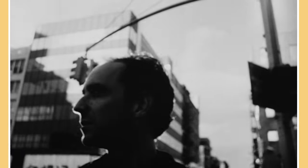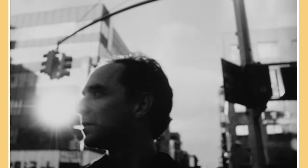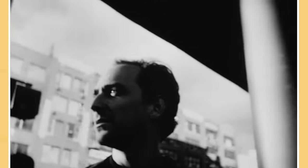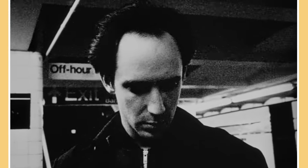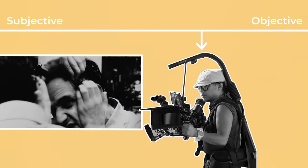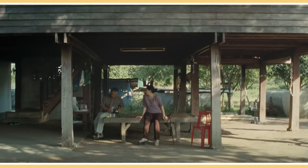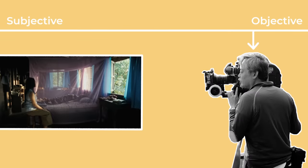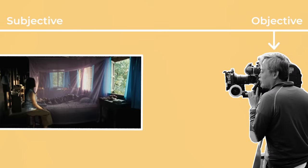A good rule of thumb is that the more stylised and experimental the camera language is, the more it's usually trying to impose a feeling on the audience, get them into the mind of the character, and therefore the more subjective it is. While the more naturalistic the camera's role is, the more it creates an observational, detached perspective that is objective.